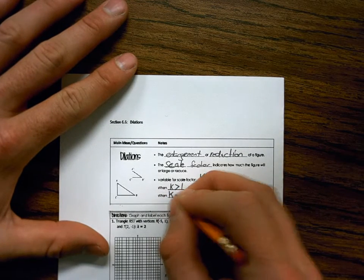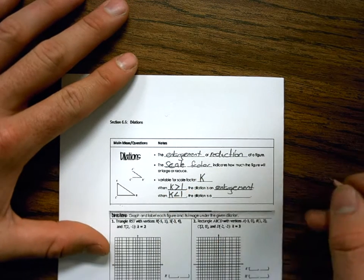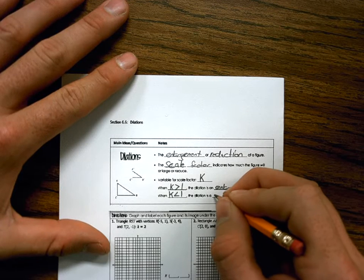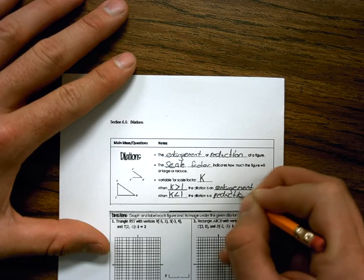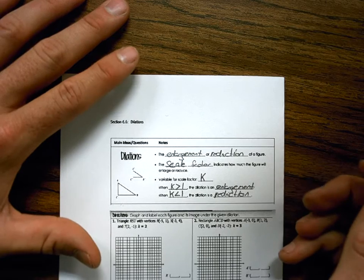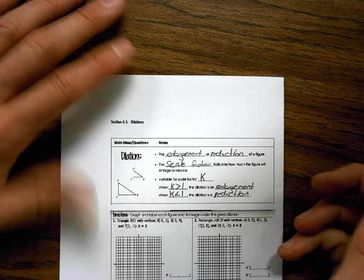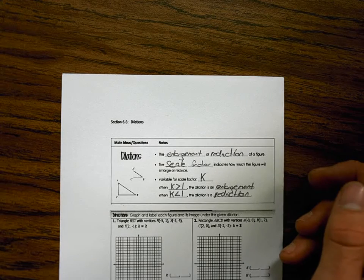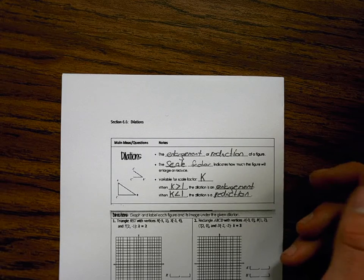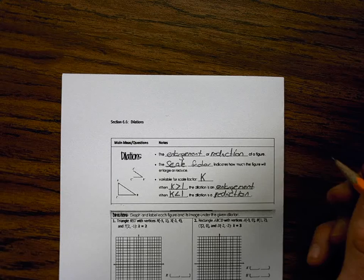Okay, when K is less than 1, dilation is a reduction. So if my scale factor is like a half, my figure is not growing bigger, it's actually getting smaller. So that's what K is less than 1.